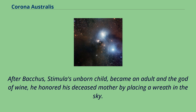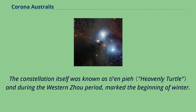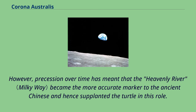In Chinese astronomy, the stars of Corona Australis are located within the Black Tortoise of the North. The constellation itself was known as Tianpie, and during the Western Zhou period marked the beginning of winter. However, precession over time has meant that the Heavenly River became the more accurate marker to the ancient Chinese, and hence supplanted the turtle in this role.